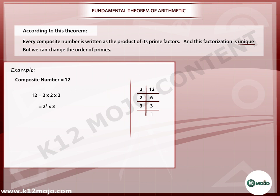According to this theorem, the composite number 12 can only be written as the product of 2 multiplied by 2 multiplied by 3. No other factor can exist here.